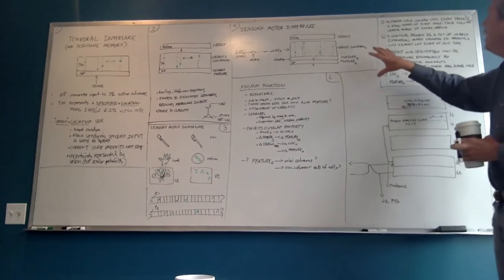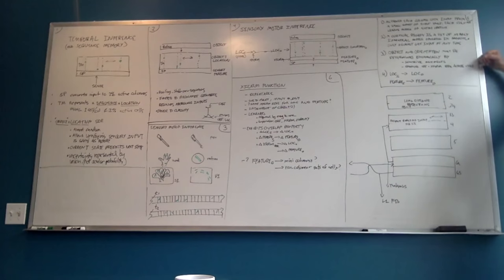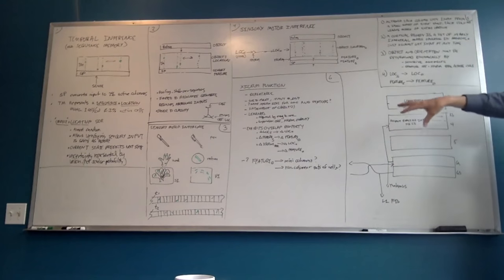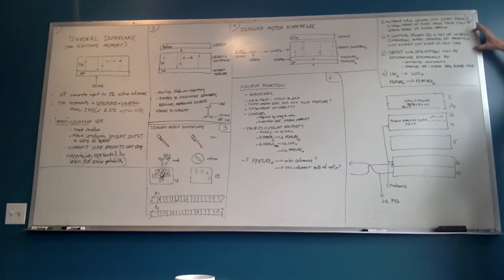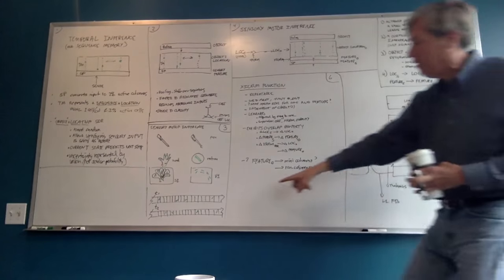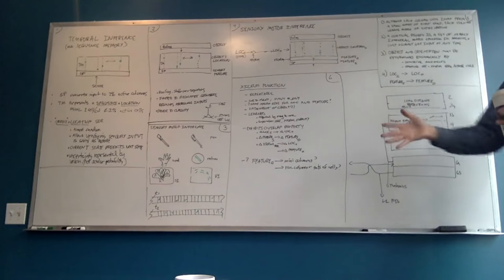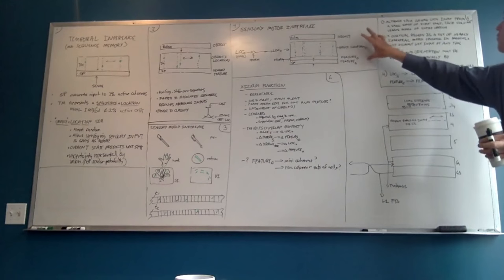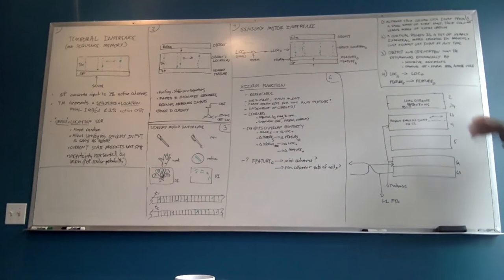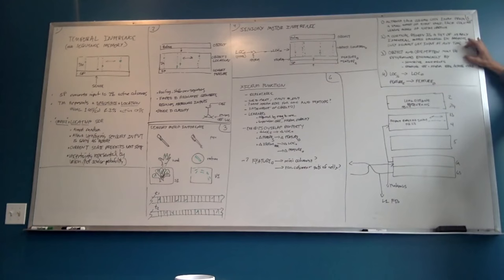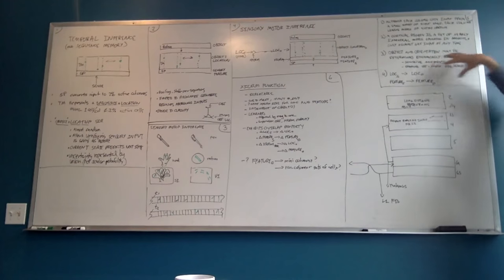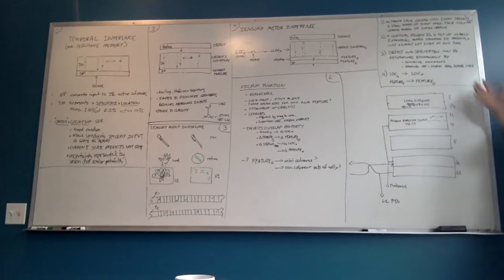Let me go down through this set of things again. This is the basic idea: each column gets an input from a small set of the input space, and each column wants to model the entire set of objects. Therefore, a cortical region is a set of nearly identical models operating in parallel. Only a subset of them are actually getting input at any point in time. Each little model sitting there independently goes: 'Oh, here's input, I'm going to try to remember it in this structure.' The object you're observing and the orientation of the object relative to the body must be determined dynamically — you don't know that up front.